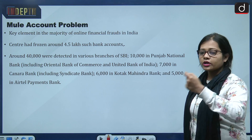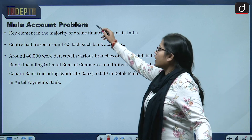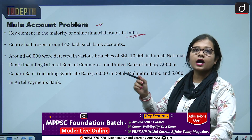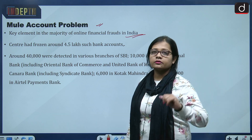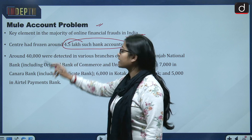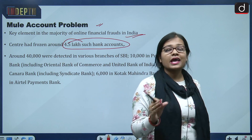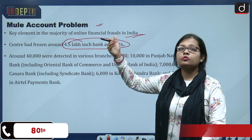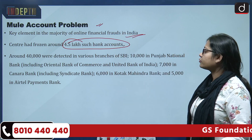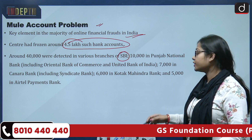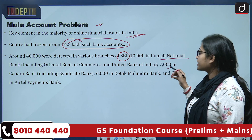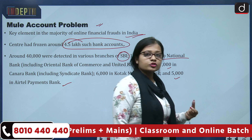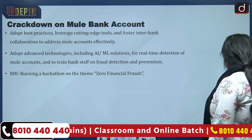The mule bank account is a key element in the majority of online financial frauds in India. The central government has frozen around 4.5 lakh such bank accounts, which shows the scale of the problem is increasing. Around 40,000 mule accounts were detected in various branches of State Bank of India, 10,000 in PNB, 7,000 in Canara Bank, 6,000 in Kotak Mahindra Bank, and around 5,000 in Airtel Payments Bank — showing that almost every type of bank is being used.